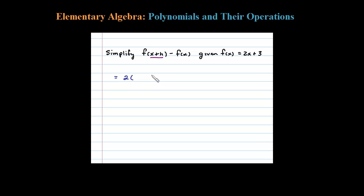f(X) is 2X + 3. Let's go ahead and substitute in X+H. So this is f(X+H) minus, that's that subtraction right there, minus f(X).